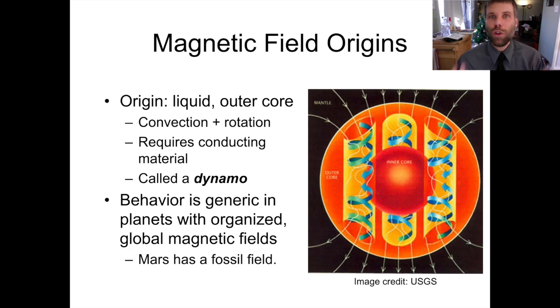Once you let them start floating around and moving, they're going to generate a magnetic field. So the trick is how you create a global, organized magnetic field out of the behavior of those individual electrons. And this is where the rotation of the planet comes in.